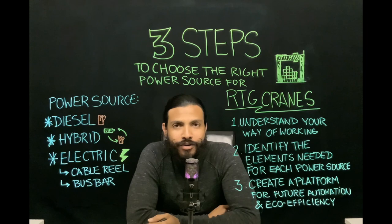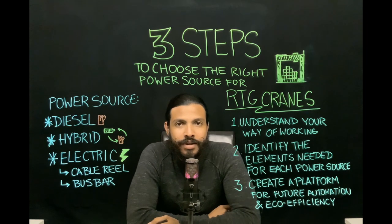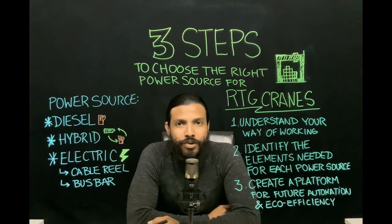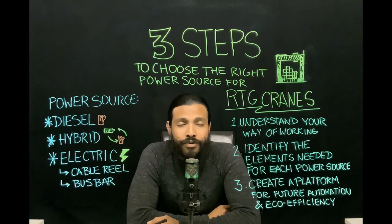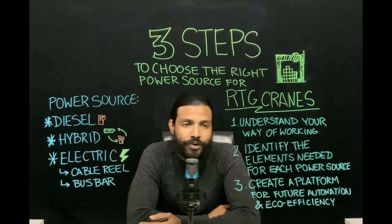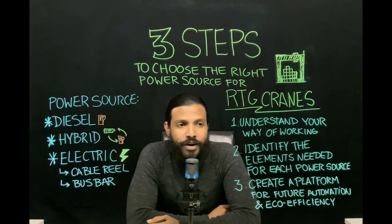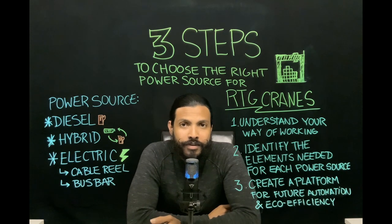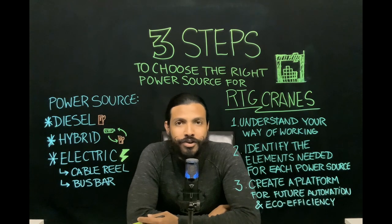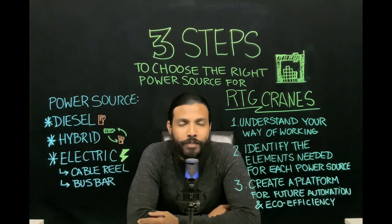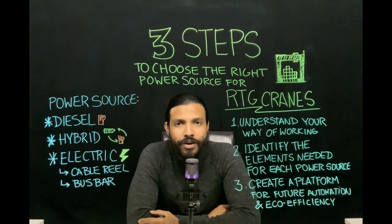Step two: identify the elements needed for each type of power source. This is quite critical because if we are talking about a brownfield terminal with an existing fleet of RTGs, you will need to consider properly changing your layout if you are going to electrify those into a back-to-back layout, for example. If you are a greenfield terminal, it's probably not that big an issue — you have more of a white paper to work through — but all these elements need to be addressed on time.